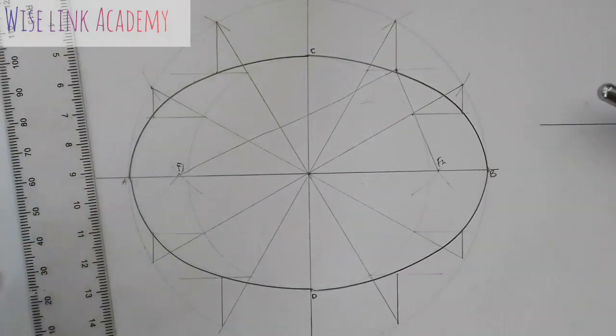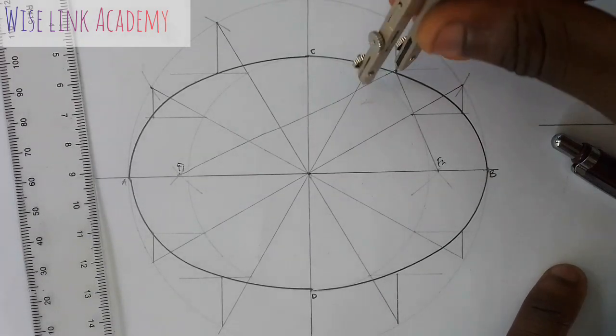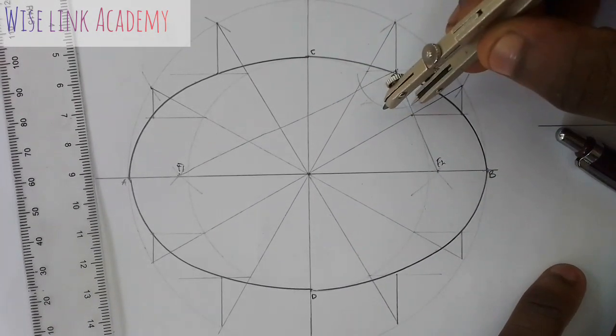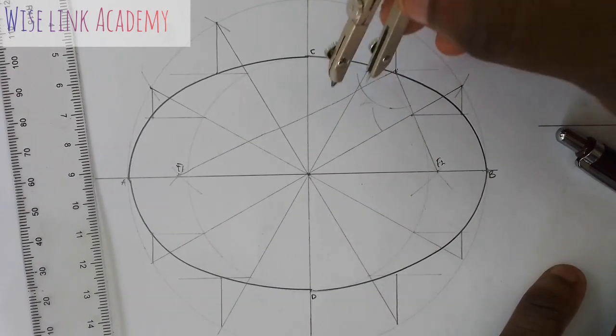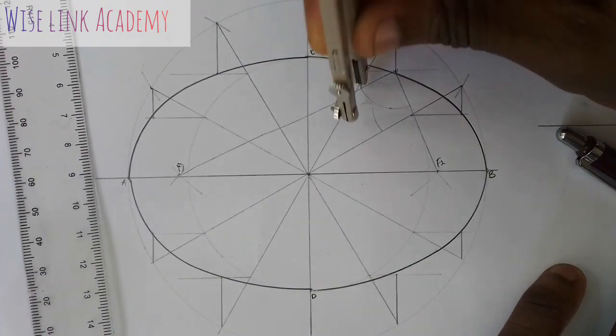So, I will draw an arc from this point here. I will draw an arc this way. So, at this point here, strike an arc. At this point here, sorry, at this point here, cut the arc.